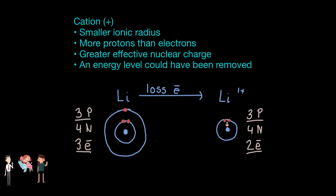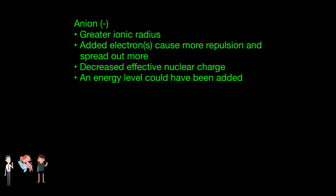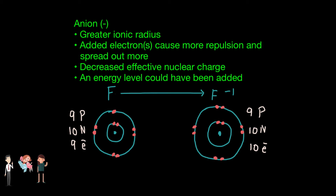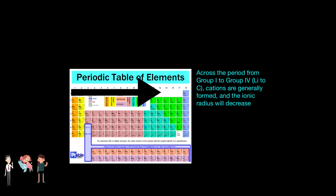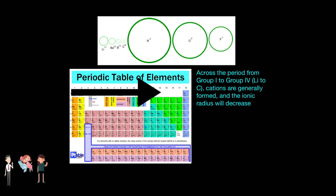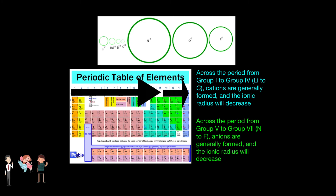Furthermore, an energy level could have been removed when forming the cation. On the other hand, an anion has a greater ionic radius than a neutral atom of the same element. When you add an electron, there is more repulsion and electrons will spread out more, increasing the ionic radius. Also, you could have added an extra energy level, which also increases the radius. As a result, when you go across a periodic table from lithium to carbon, the ionic radius will decrease, in which more electrons are taken out while more protons are present, resulting in a larger effective nuclear charge. The electrons become pulled in closer towards the nucleus, and thus ionic radius decreases for cations across a period.